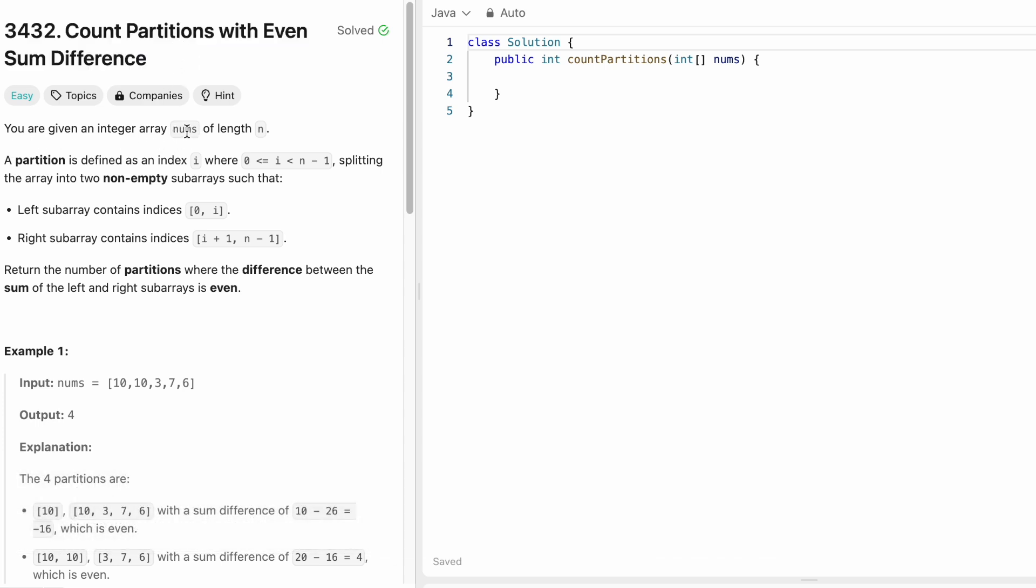In this question we are given an integer array called nums of length n. A partition is defined as an index i where i is between the starting index and n-1, splitting the array into two non-empty subarrays. The left subarray consists of indices from 0 to i both inclusive. The right subarray consists of elements with indices i+1 to n-1 both inclusive. Our task is to return the number of partitions where the difference between the sum of the left and the right subarrays is even.